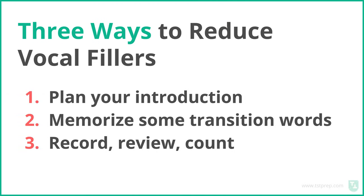The third way is to record, review, count. This is how you practice at home. If you practice a speaking response, you record your voice, listen back, and count how many 'uhs' or 'ums' you have. If you have 10, do the same response again and try to have fewer — maybe eight instead of ten. You're always going to have these vocal fillers; they're natural, but you want to reduce them if you're saying them too much. That's mistake number one.